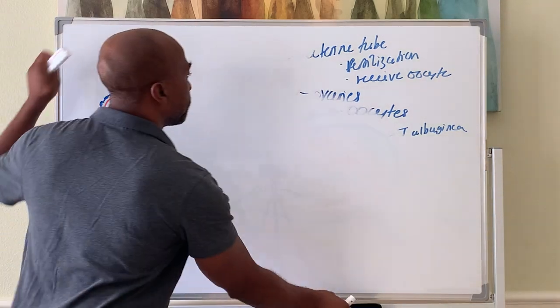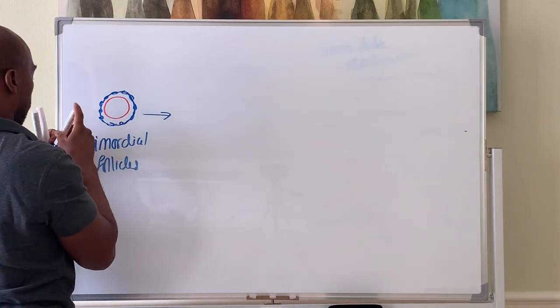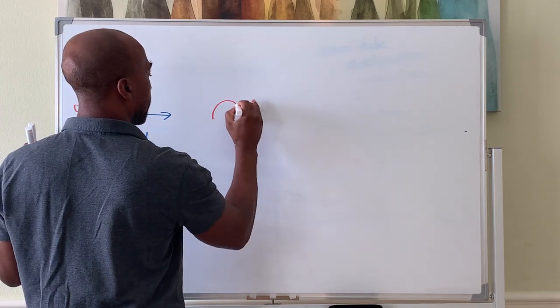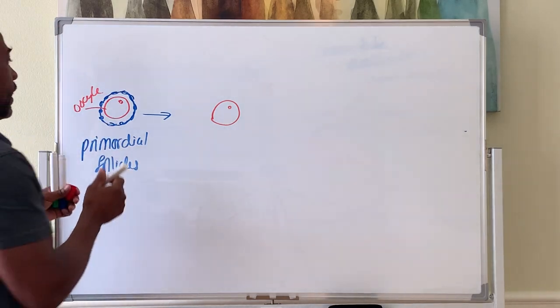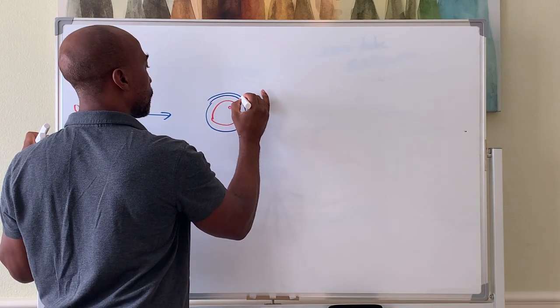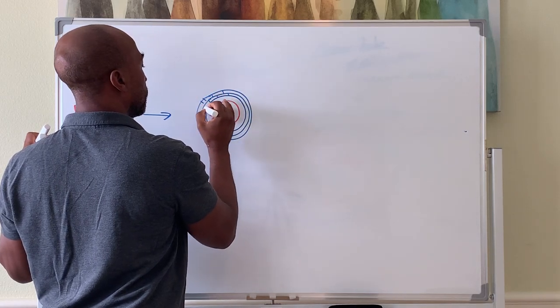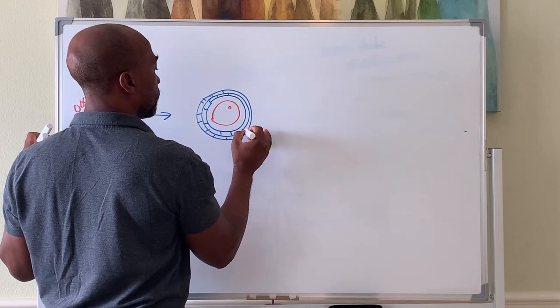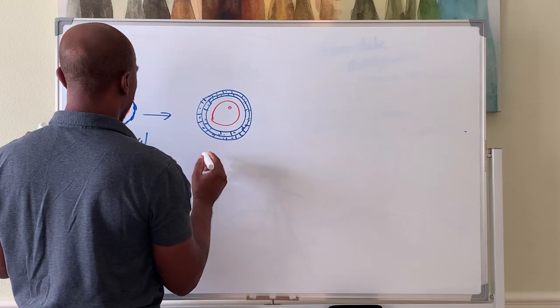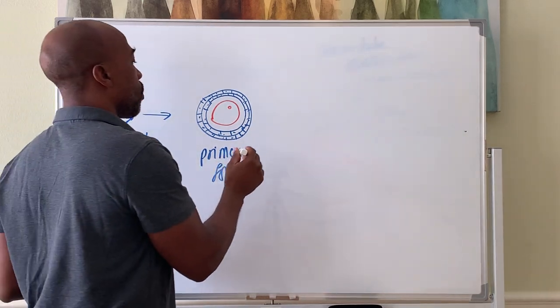After puberty, these follicles start to mature and they will turn into primary follicles. Again, you still have the oocyte. The oocyte is still sitting there. That's the nucleus of the oocyte, and the follicles now start to get a little bigger. So you have probably two cell layers around the oocyte. Now we call this a primary follicle.